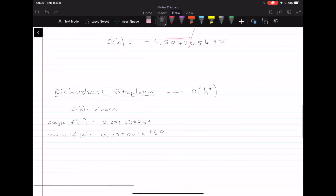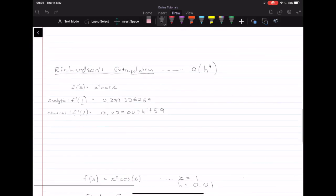It should be much better, but it is a slightly harder process. So I've gone ahead and we're going to be using this function f(x) equals x² cos(x), and we're looking for x equals 1. And I've got both the analytical and the solution from central difference.